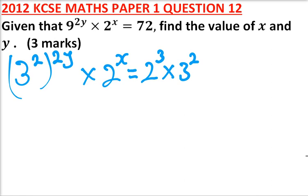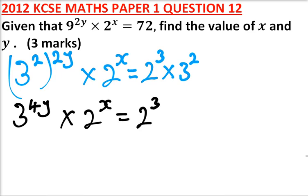So once you get there, you open the bracket, you have 3 to the power 4y multiplied by 2 to the power x is equal to 2 to the power 3 multiplied by 3 to the power 2.